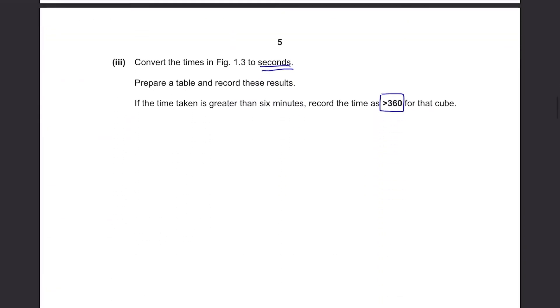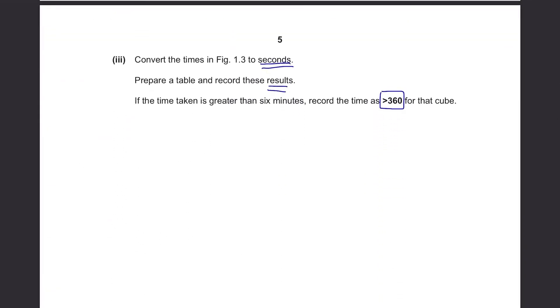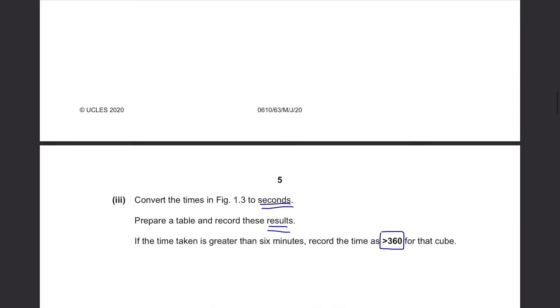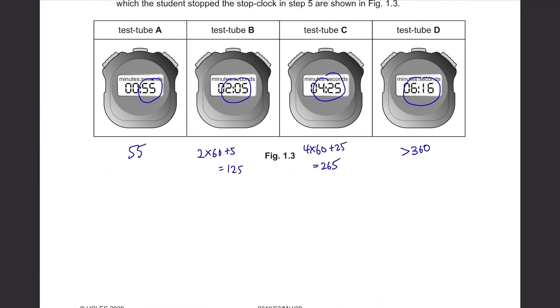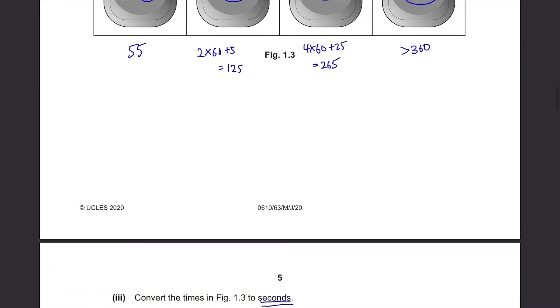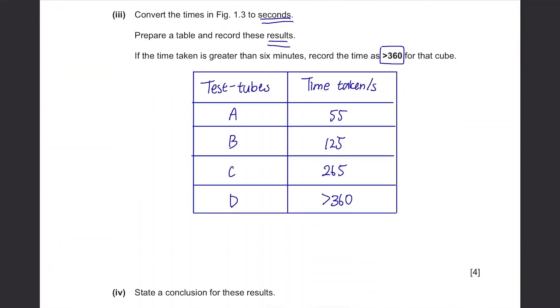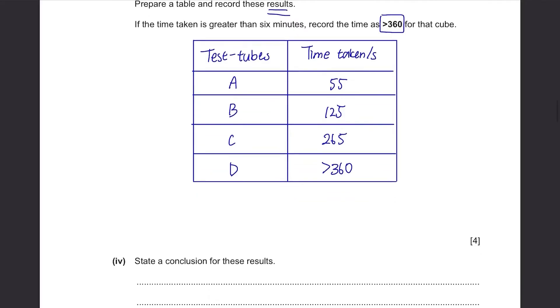And when we draw the table, they said put the results into the table. And these results are basically about the test tubes and the time taken. So you'll need one column for the test tubes and the second column for the time taken in seconds. This is the complete diagram. It's not hard to draw. You just have to identify what information you're supposed to put in your table.